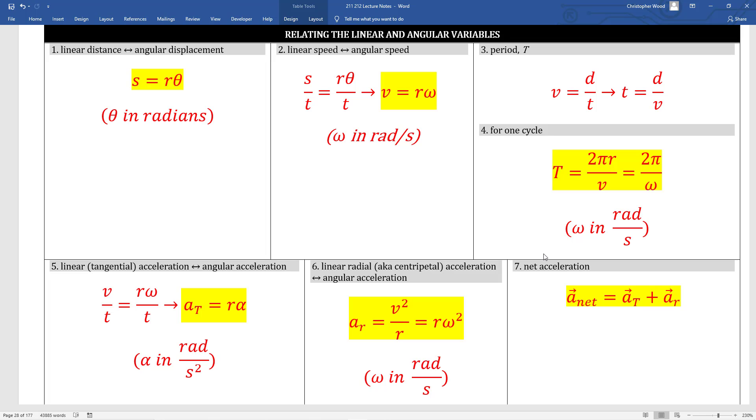Box 1 links linear distance and angular displacement. Box 2 links linear speed and angular speed. Box 5 links linear acceleration with angular acceleration. Box 3 and 4 introduce the very special term known as period, the time for one cycle.